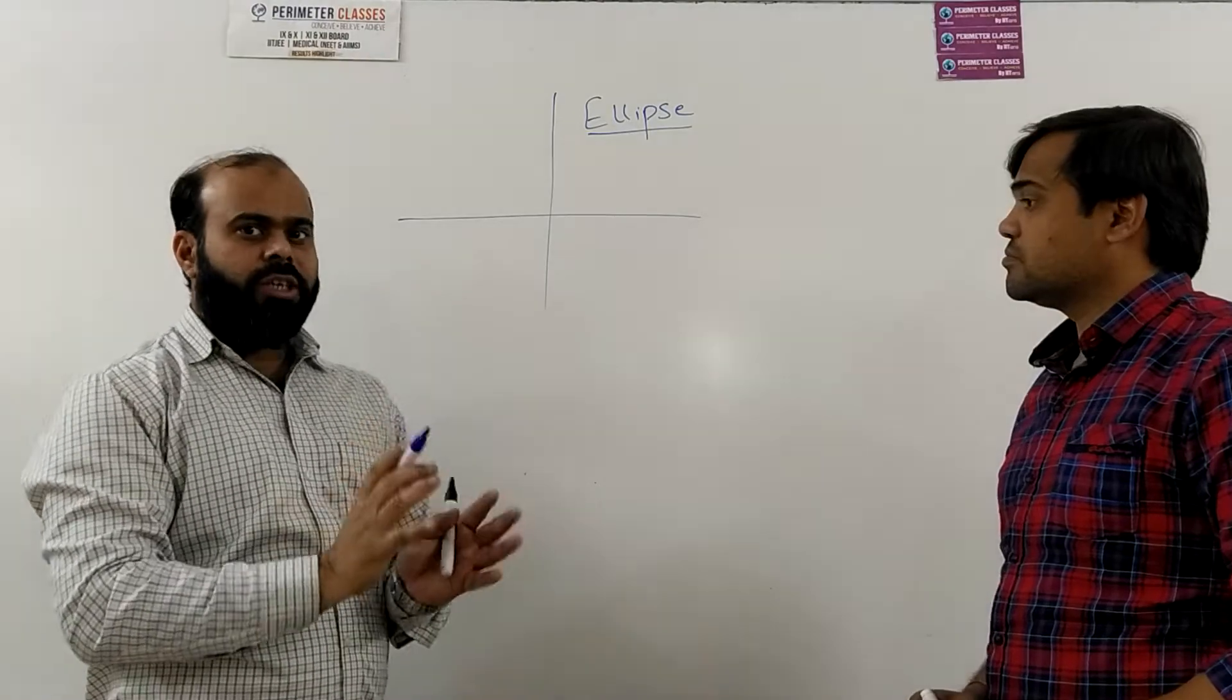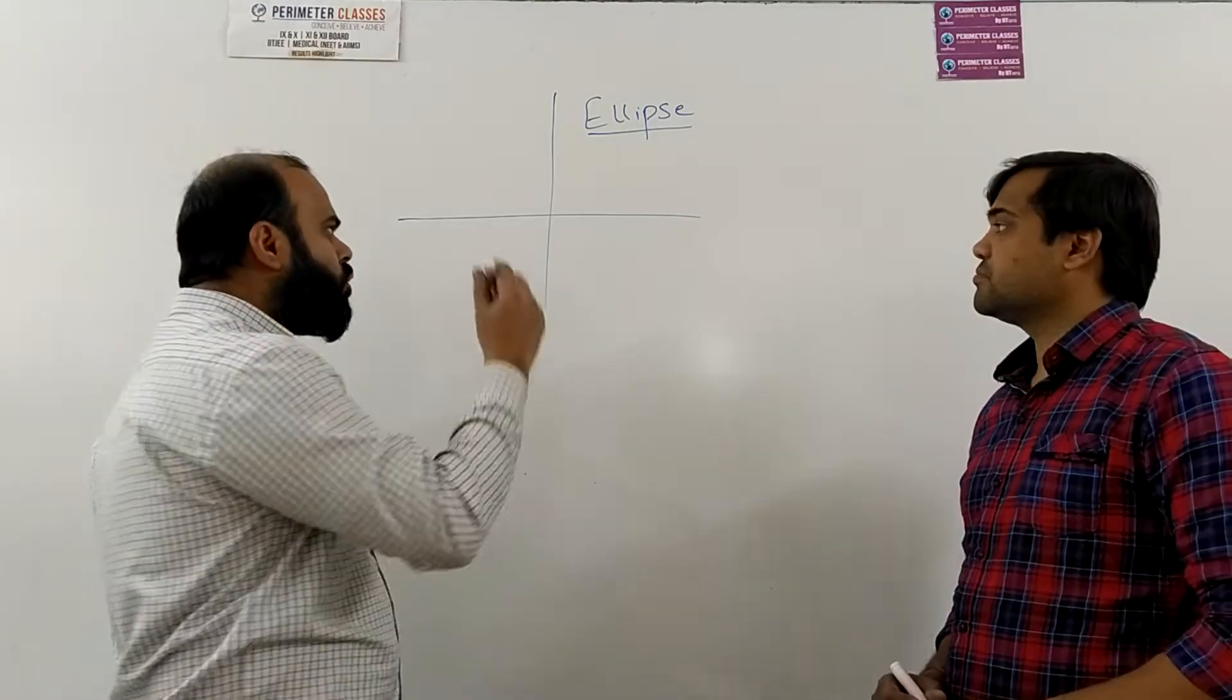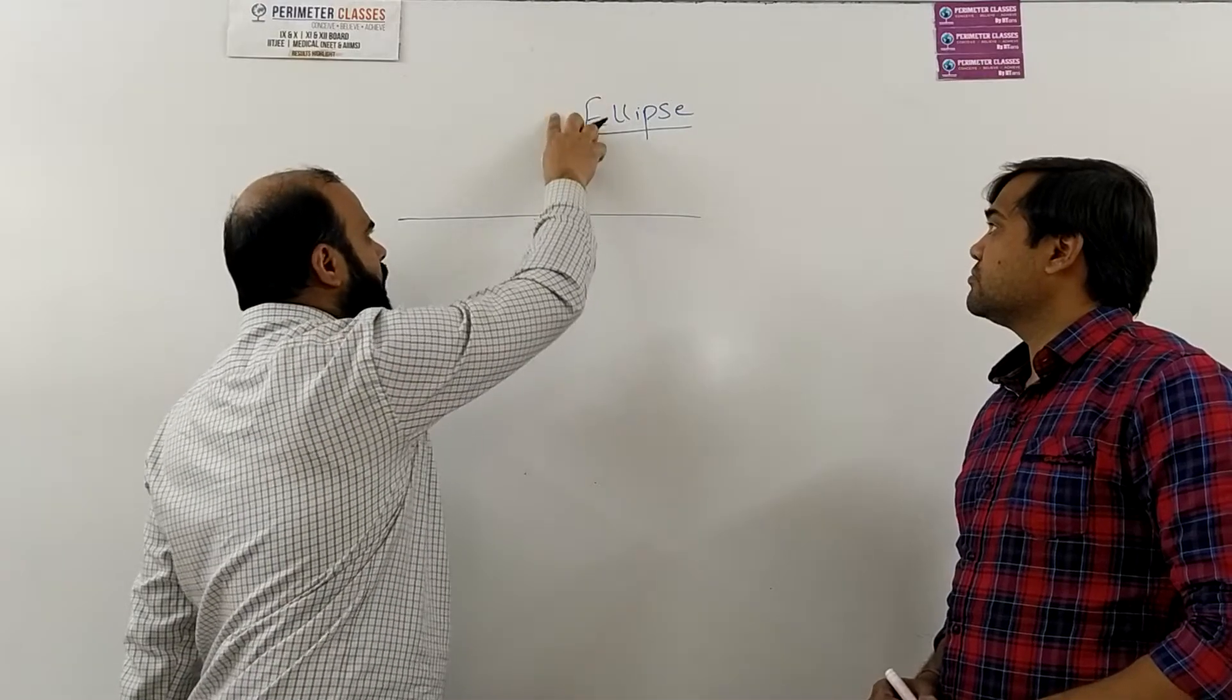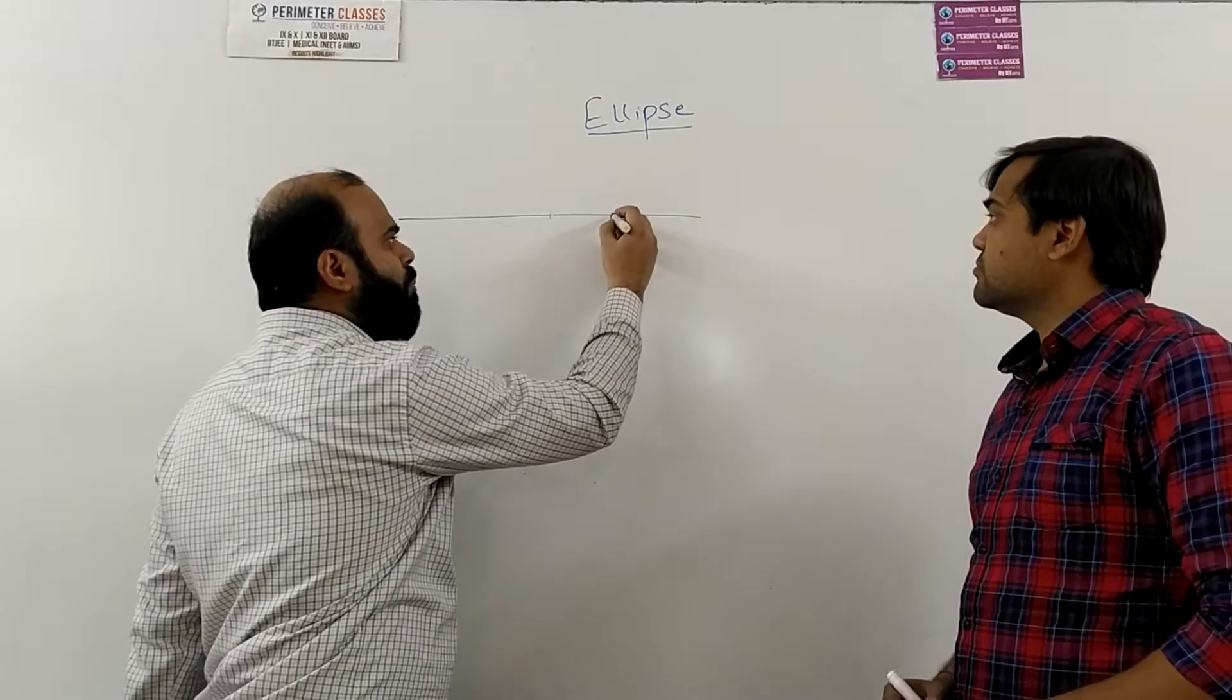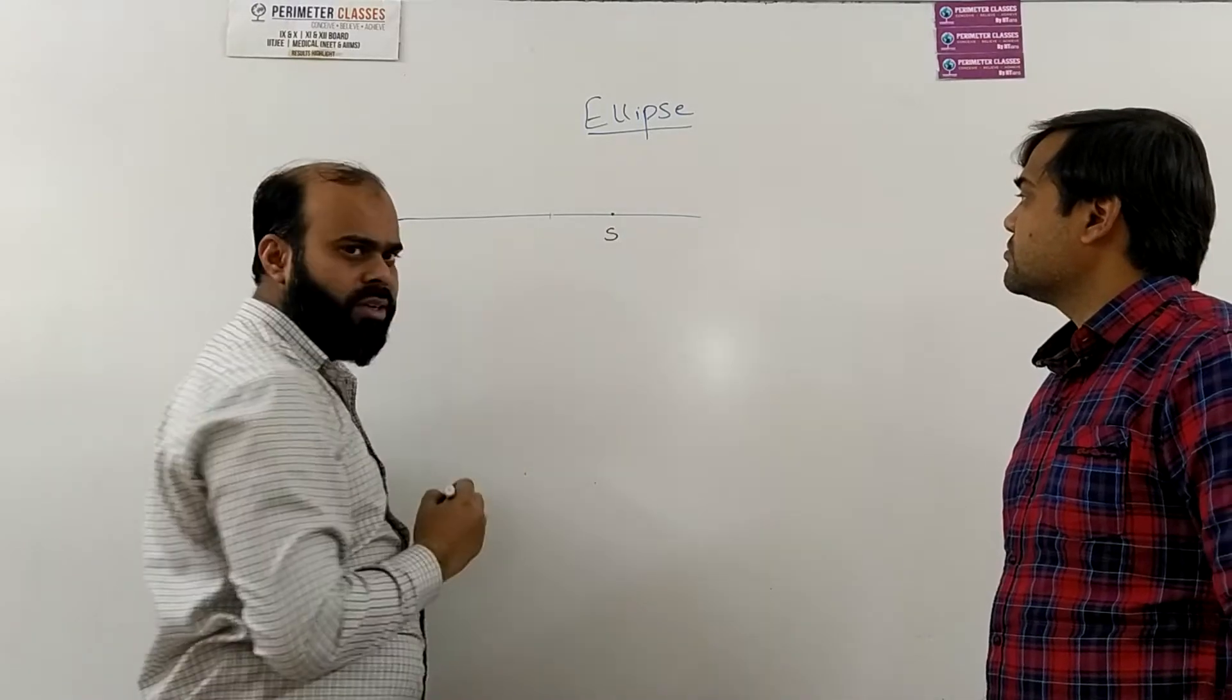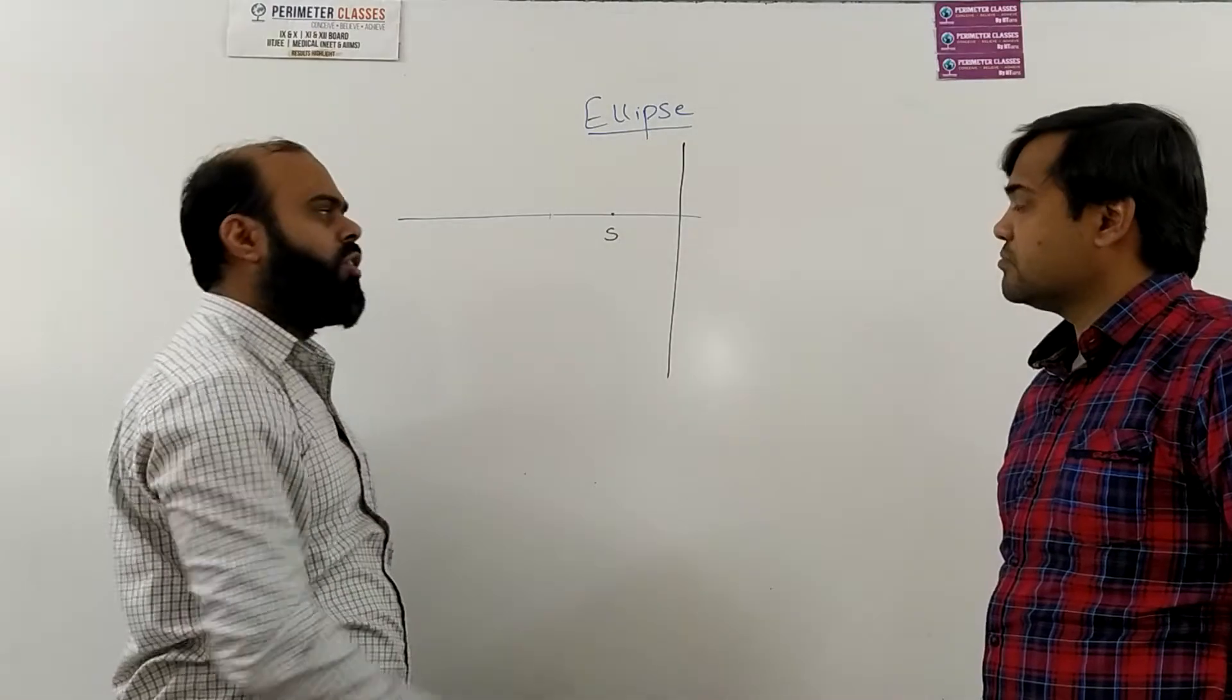So before giving you the equation of ellipse I will tell you a few terms. So what am I doing here? I am drawing a horizontal line and I am taking a point S here and I am taking a line which is perpendicular to this horizontal line.